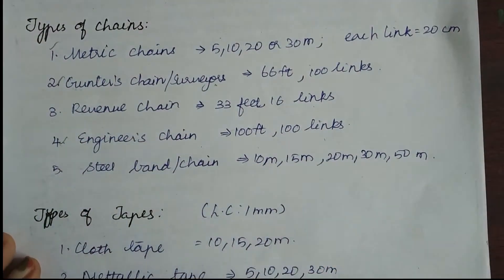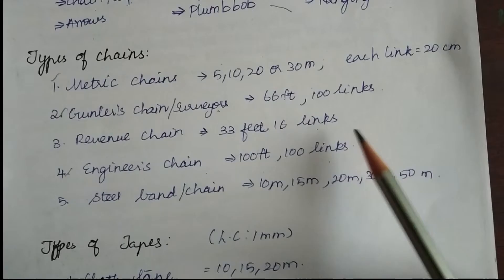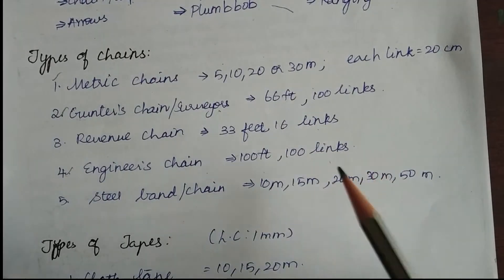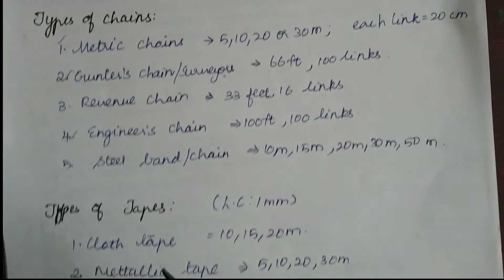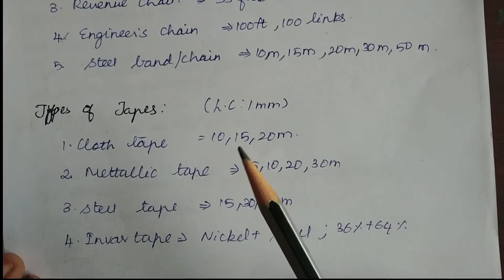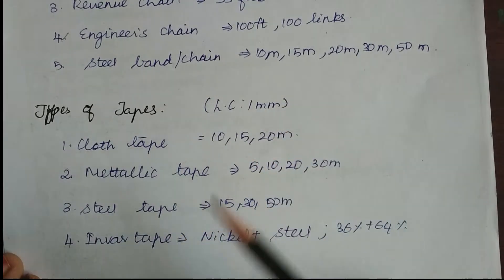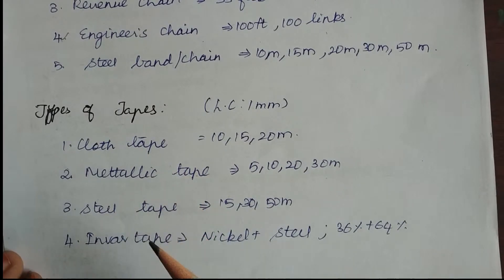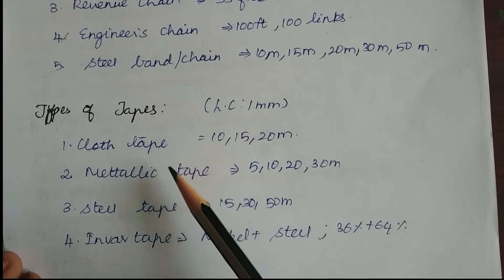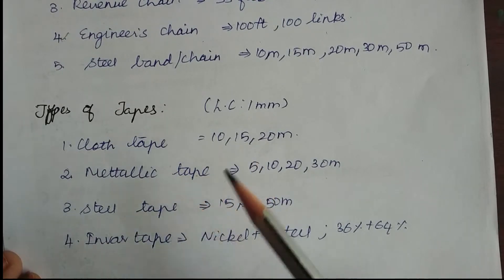In chains we don't have a particular least count — it varies from chain to chain — whereas in tapes we have a constant least count of one millimeter. There are four types of tapes available. The first one is cloth tape; as the name suggests, cloth tapes are made of linen.